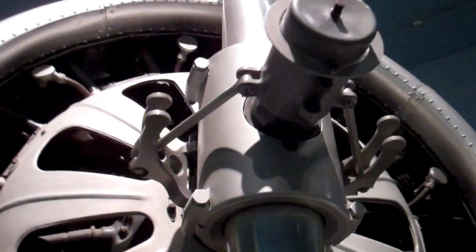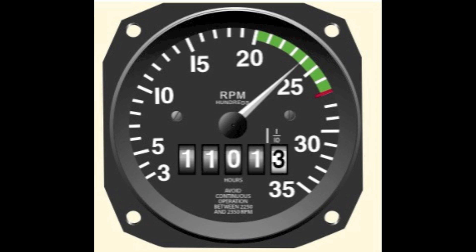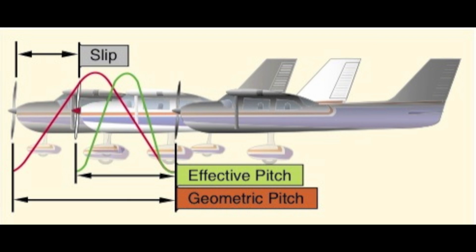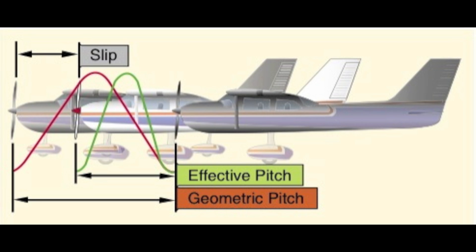As a review from part 1, the constant speed prop is a device which allows us to efficiently convert power from the engine into thrust. A constant speed propeller is attempting to keep the engine at a constant RPM by adjusting the blade angle and therefore the pitch of the propeller. The propeller pitch is the distance in inches which the propeller would screw through the air in one rotation. When changing the blade angle, we change the pitch of the propeller — we call these controllable pitch propellers.